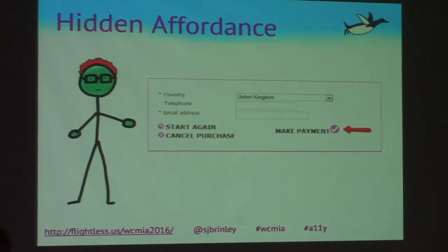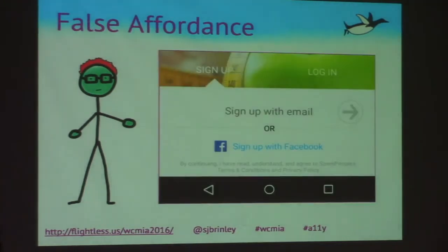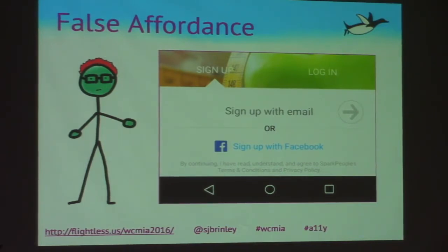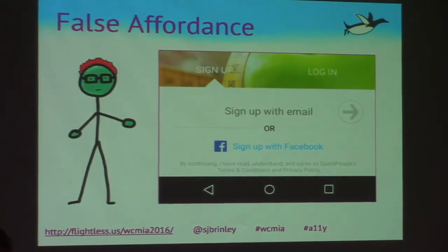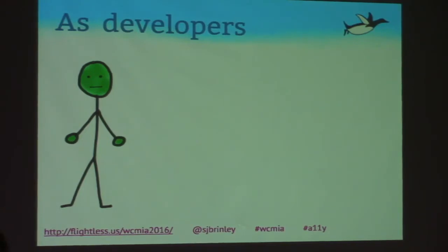Affordance gives visual guidance on how to interact with a website. Hidden affordance is when it's not obvious how to take action — for example, a 'Make Payment' area that doesn't look like a button or link. False affordance is when something looks like it does something but doesn't — like an arrow button that appears clickable but does nothing; you actually have to click on the gray text that says 'Sign up with email' before a cursor appears.